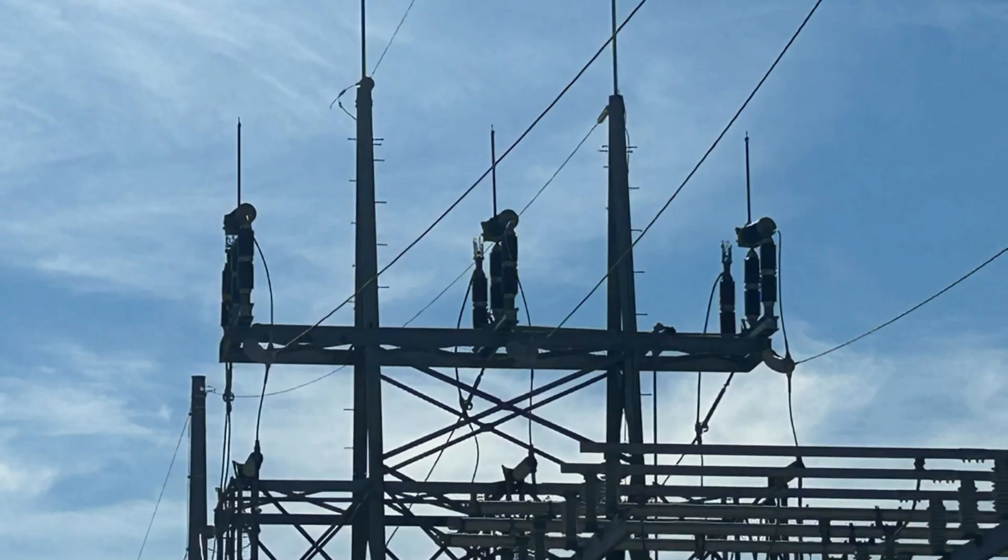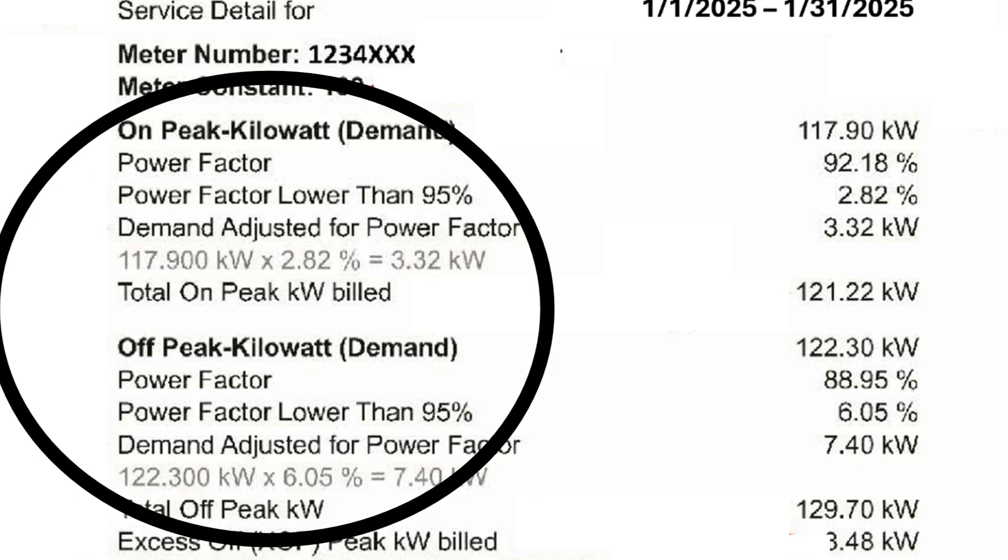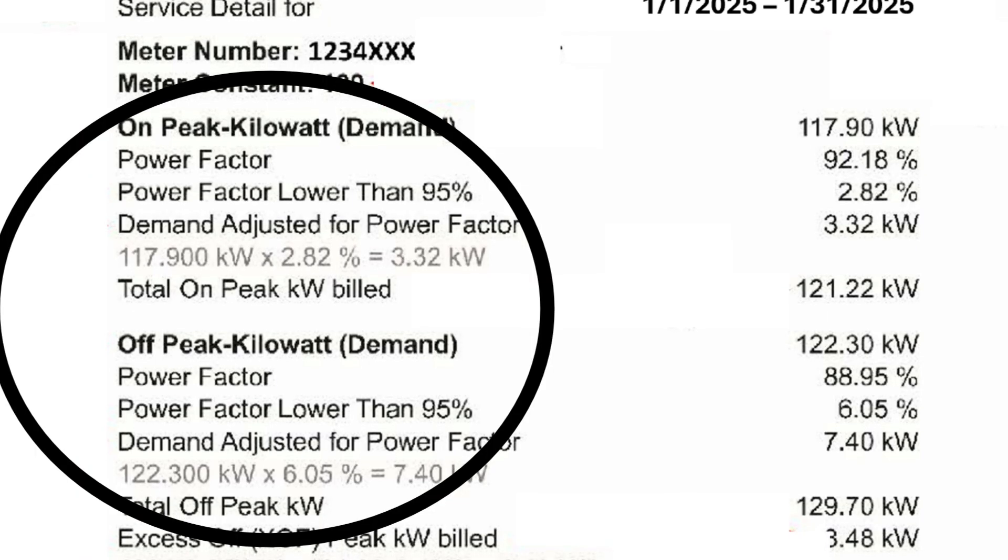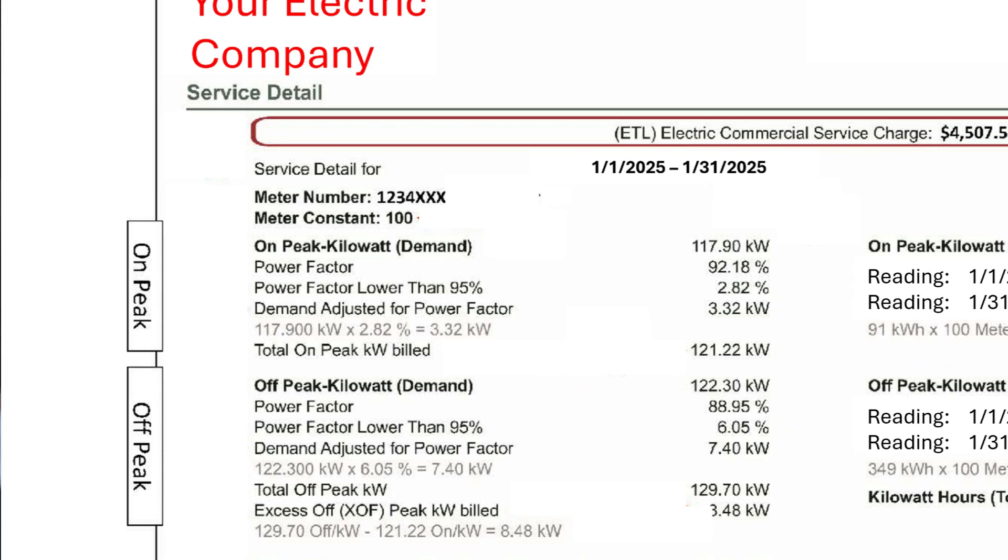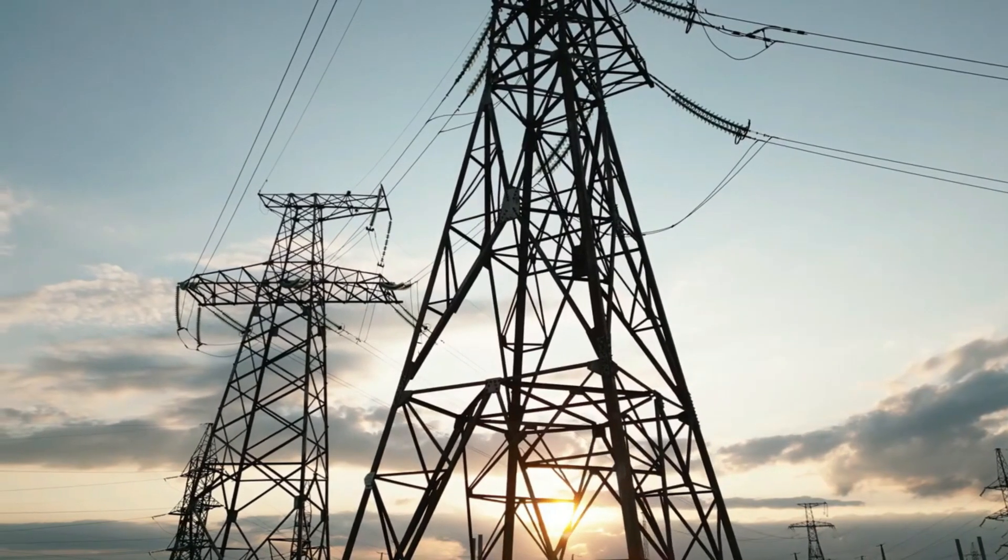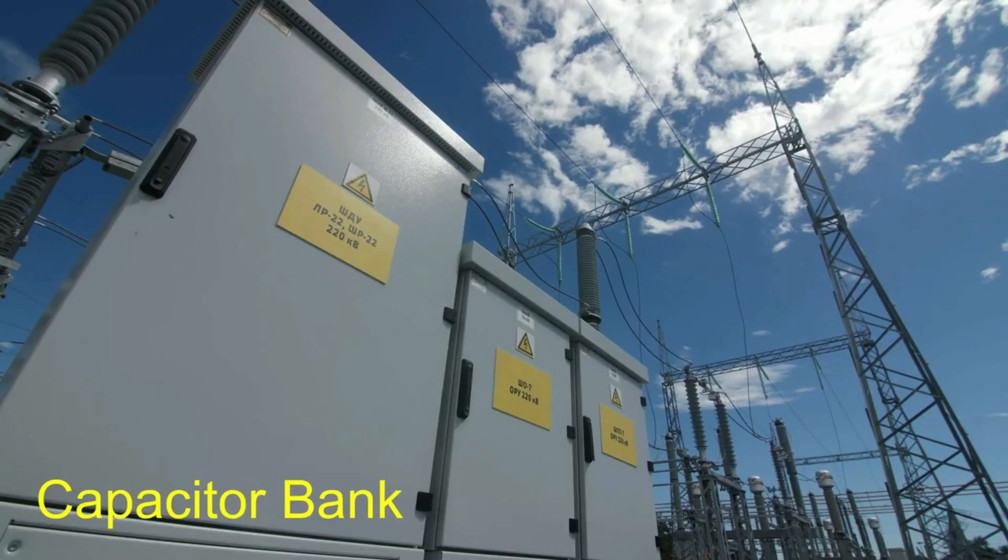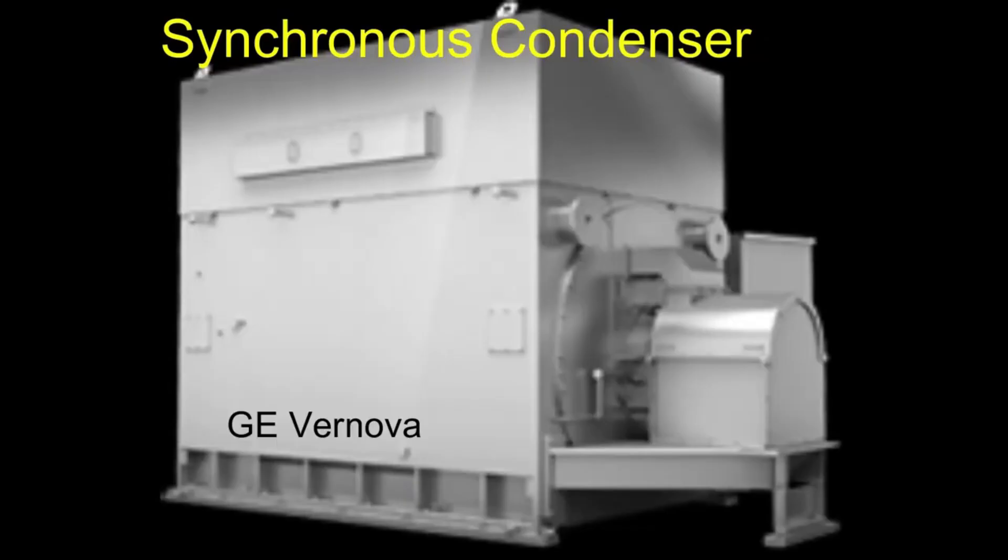To address this, utility companies often charge industrial and commercial customers with low power factors additional fees and penalties. These customers can improve their power factor by installing power factor correction devices, such as capacitors or synchronous condensers, which offset the reactive power in the system. By doing so, they reduce the overall current flow, lower energy losses, and they avoid costly penalties.